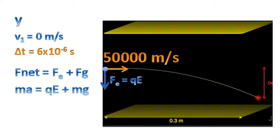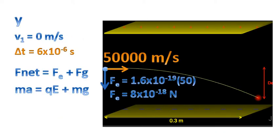And so there's our calculation of the electric force. The charge, in this case, 1.6 times 10 to the negative 19 coulombs times 50 newtons per coulomb. And that's our value. 8 times 10 to the negative 18 newtons.